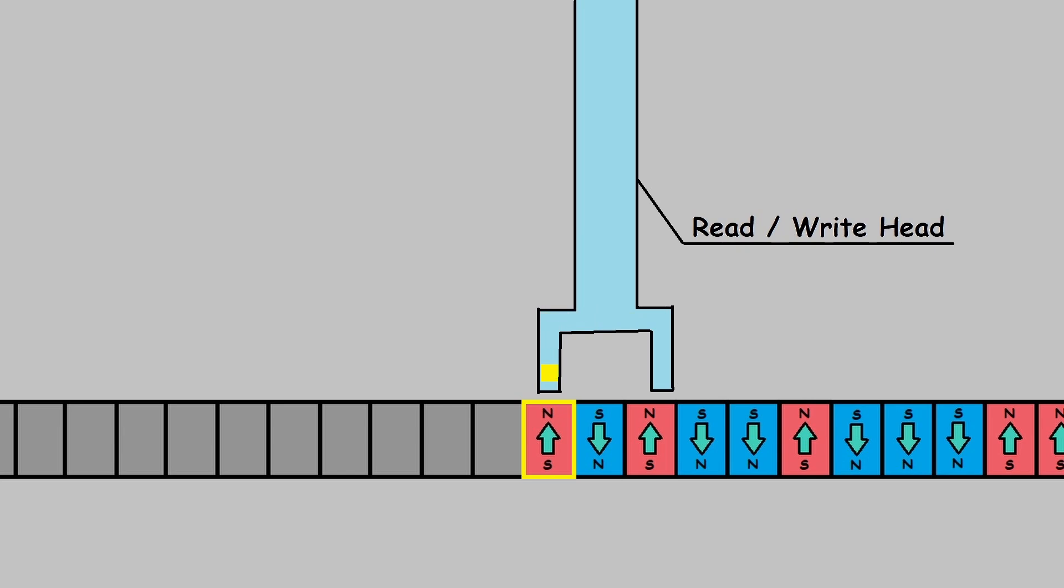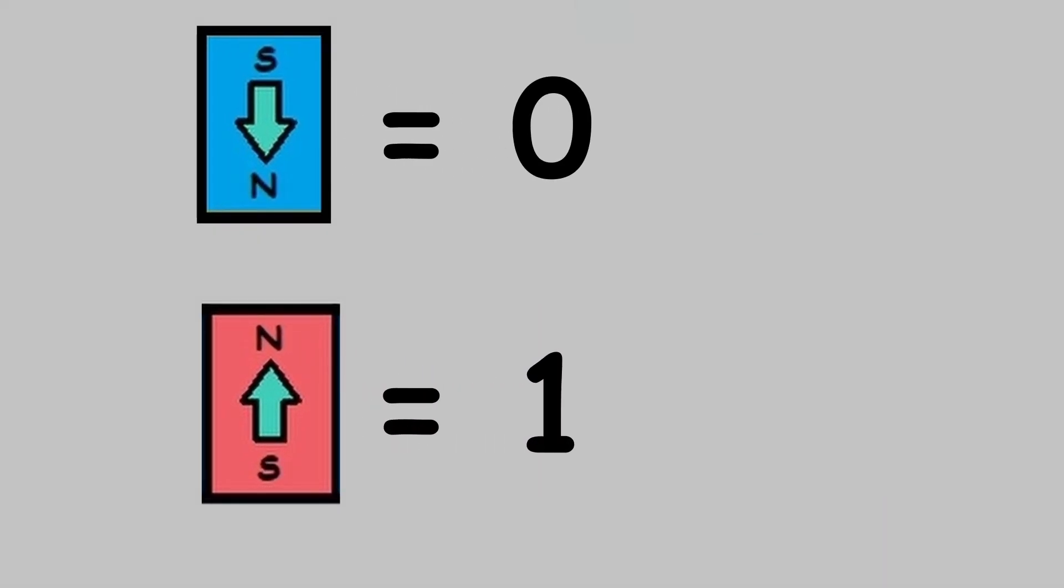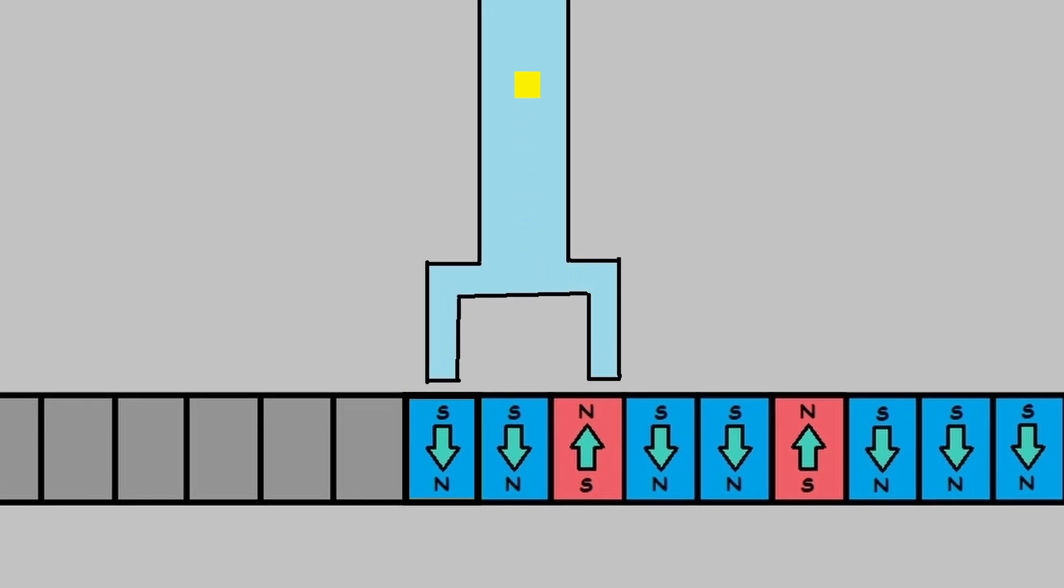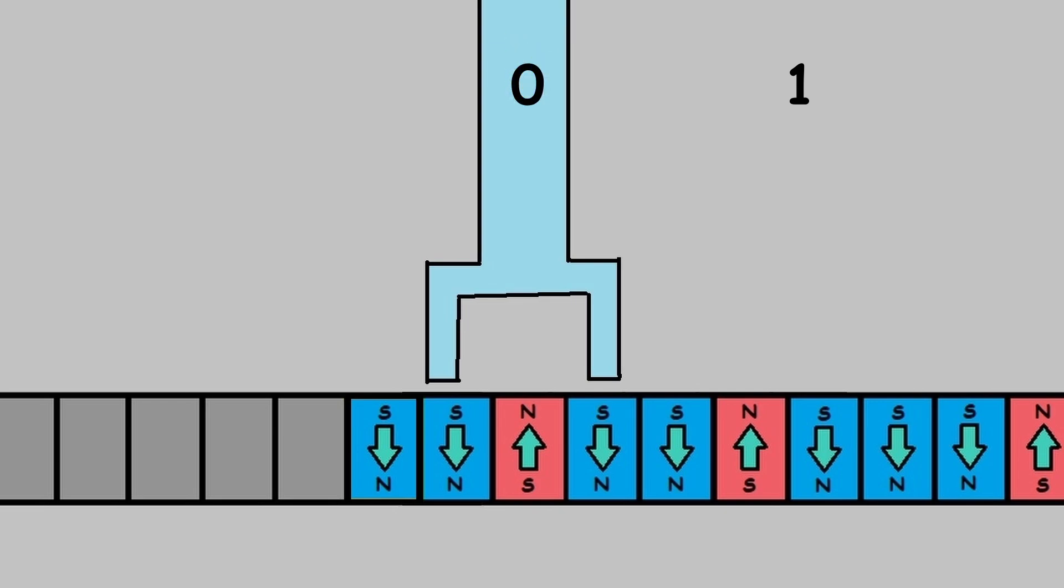But the computer can't understand these magnetic fields, so in order to read data, each magnetic field must be interpreted as either a 0 or a 1. As the read head passes over a cell whose magnetic field is pointing in the up direction, it will be interpreted as a 1, and if it's pointing in the down direction, then it will be seen as a 0.